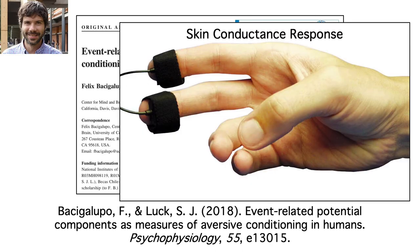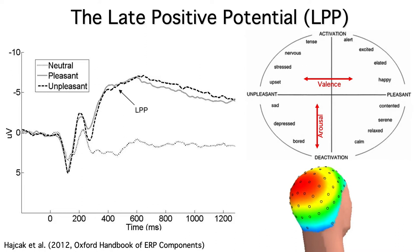For decades, researchers have studied aversive conditioning using the skin conductance response, which is related to the sweaty palms you get when you're nervous. Felix thought the late positive potential of the ERP waveform might also be a useful measure of aversive conditioning, directly measuring brain activity rather than secondary changes in the skin. The LPP is elicited by emotionally arousing stimuli, whether they're positive or negative, so it would make sense that you'd also see an LPP for stimuli associated with negative outcomes in a conditioning paradigm.